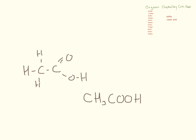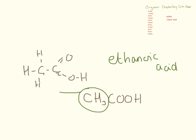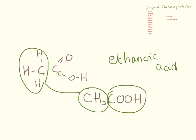The next one we need to know has one, two carbons — so this is ethanoic acid. The formula is written as it's drawn: we have a CH₃ group which corresponds to the CH₃ group in the structure, and a COOH group which corresponds to this group here.